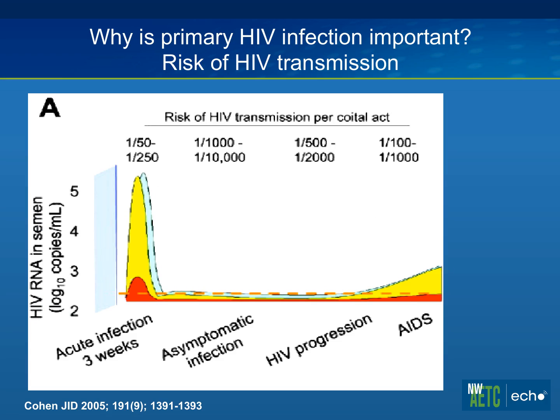Why is primary infection important? One of the main reasons is that people who are recently infected are very likely to transmit per sex act. This is partially due to the fact that viral loads when people are first infected can be very high — in the 1 million, 10 million, 100 million range. But there's something else specific about recent infection: a virus that's just been transmitted from somebody else is probably more likely to be transmitted on.